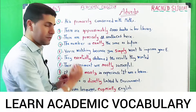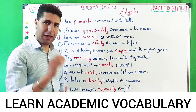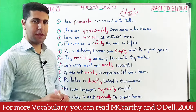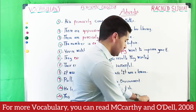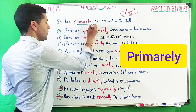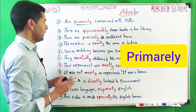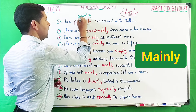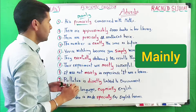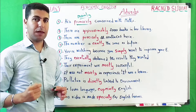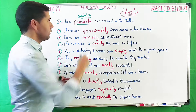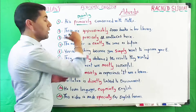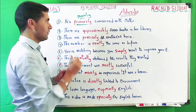We are going to go through each sentence and stop at each adverb. 'He is primarily concerned with mathematics.' Here we have the adverb 'primarily.' When I say he is primarily concerned with mathematics, it means he is mainly concerned with mathematics — his main concern, his main interest, his main goal. So we can say 'mainly concerned' or 'primarily concerned.'